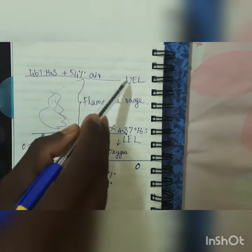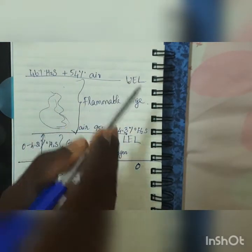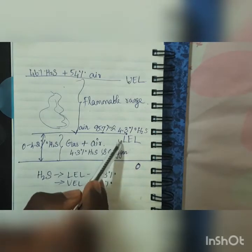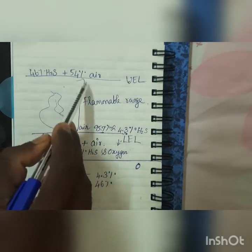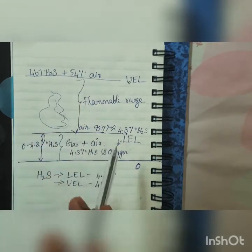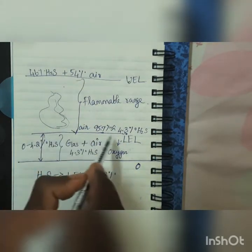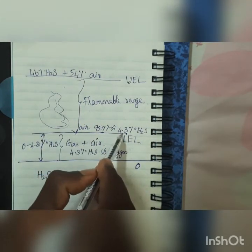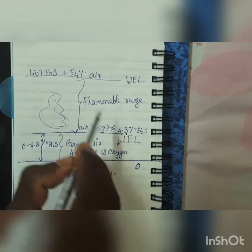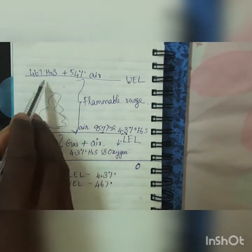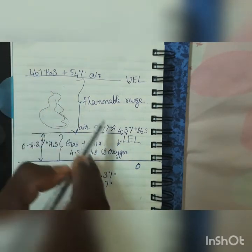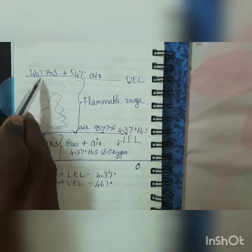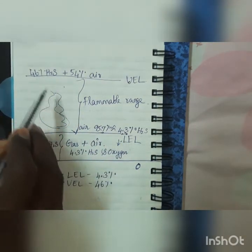So to recap: UEL is at 46%, and LEL is at 4.3% for H2S.